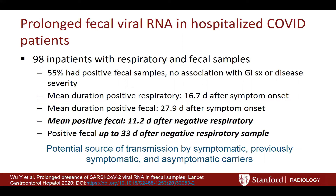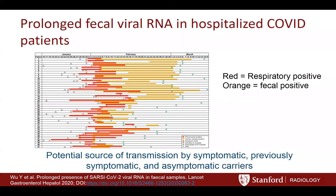We also know that some patients carry the virus in their feces, and the duration of fecal shedding actually exceeds that of respiratory shedding. The mean duration of fecal shedding was 28 days after symptom onset — meaning positive fecal tests lasted an average of 11.2 days after the patient had a negative respiratory sample, and the longest was 33 days after a negative respiratory sample. This means feces are a potential transmission source from symptomatic, previously symptomatic, or asymptomatic carriers.